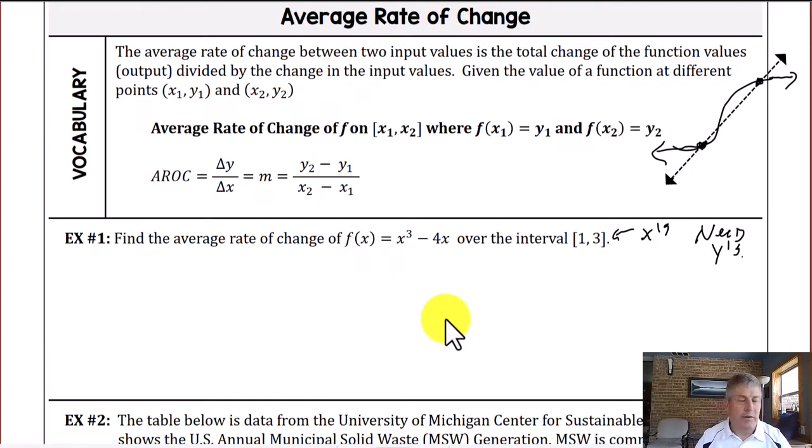So in example one here they give us a function and they ask us to find the average rate of change of f of x equals x cubed minus 4x. Now this is a cubic function so it's going to have some curves in it and they want to just look at the interval from x values from 1 to 3. So we already have our change in x. We know our change in x or our denominator of our slope function is going to be 2, but we need our y value. So we're going to have to plug that in and substitute that in and find that out.